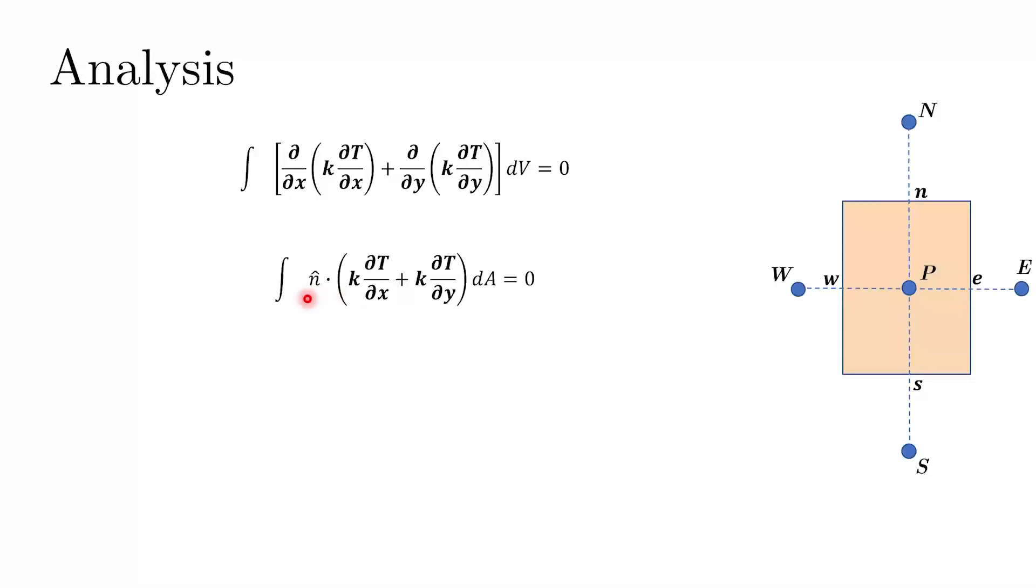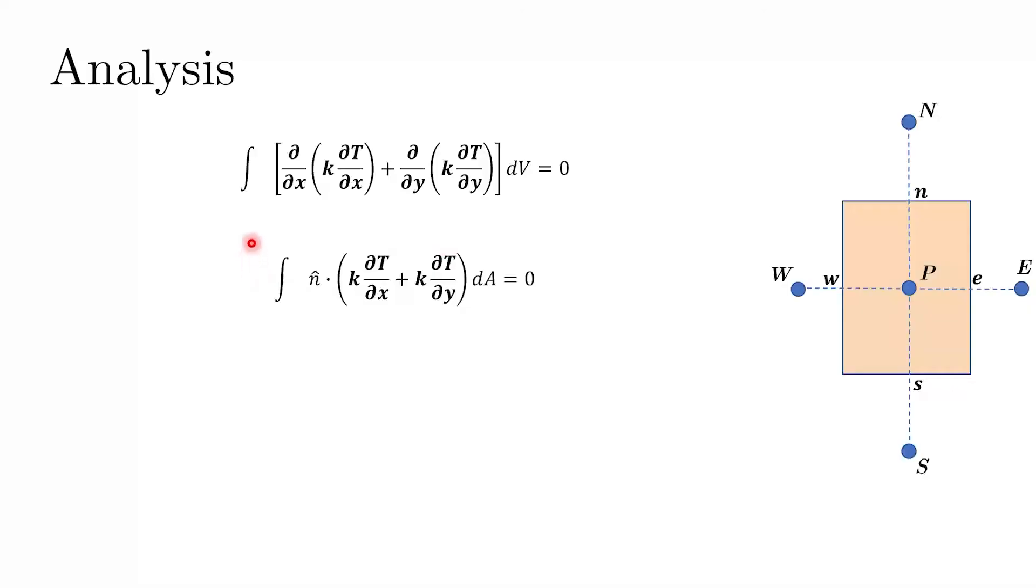So what Gauss theorem does is, that it converts the volume integral to an area integral. And we are introduced a new vector or the outward normal vector for that particular area. So now, once we have got this second equation, that says that the dot product of the outward normal vector to this quantity, when integrated over the entire area, is 0. Now, the important part to understand is, that this finite volume has 4 faces, and therefore 4 areas.